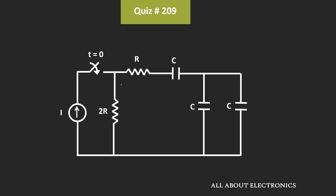That means if we see the circuit at time t is equal to 0, then it will look like this. Now here, to find the RC time constant of the circuit, we will assume that all the independent sources in the circuits are 0. That means we will assume that this current source I is equal to 0.